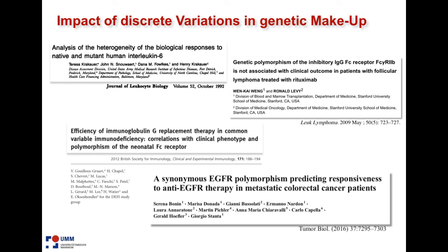We know this from pharmacogenomic studies in the past. And already this morning, we heard from Ron Van Schaik's work in Rotterdam — they've gone so far as to provide a little card with the genotypes of the cytochrome P450s for patients. This will also have to be integrated.